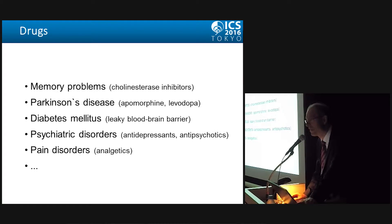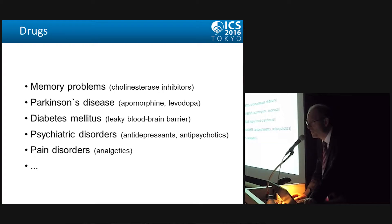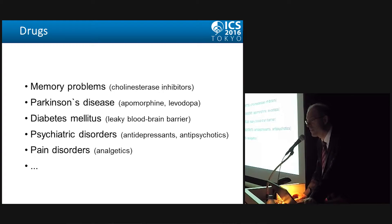Ask the patient about their drugs. Is it a neurological patient with memory problems — cholinesterase inhibitors? Parkinson's disease — apomorphine, levodopa? Diabetes mellitus may induce a leaky blood-brain barrier. Psychiatric disorders — antidepressants, antipsychotics — may cause urinary retention. And also pain disorders, especially opiates and analgesics, may be an issue regarding voiding dysfunction. Obviously many other drugs and drug interventions are relevant.